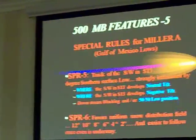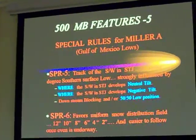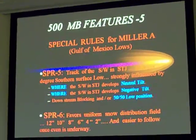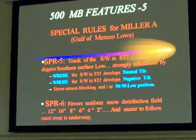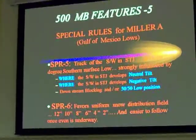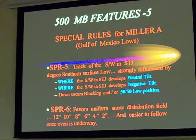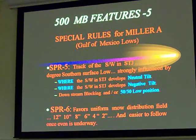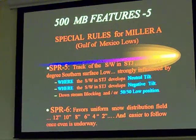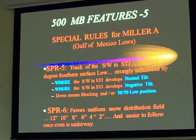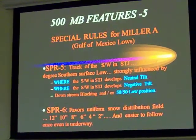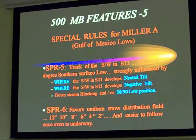The last rule for Miller-A systems: uniform snow distribution. Because they're coming up the coast, the snowfall is easy to track when you're doing nowcasting. Generally you get a more even distribution — 10 inches, 8 inches, 6 inches, 4 inches, 2 inches. That's the advantage of Miller-A systems.